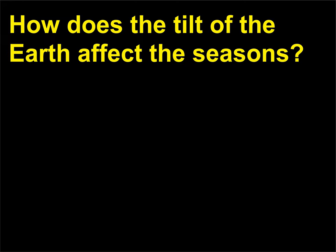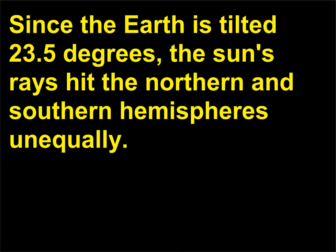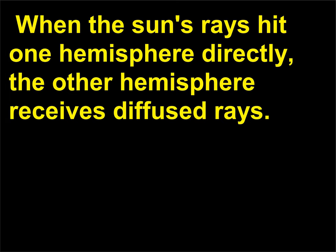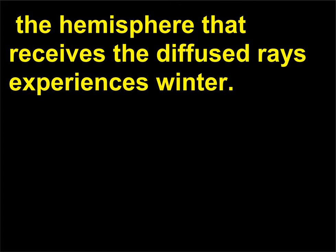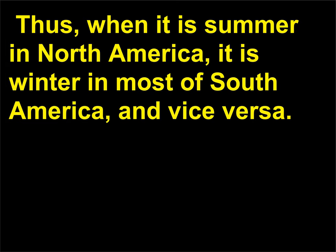How does the tilt of the Earth affect the seasons? Since the Earth is tilted 23.5 degrees, the Sun's rays hit the northern and southern hemispheres unequally. When the Sun's rays hit one hemisphere directly, the other hemisphere receives diffused rays. The hemisphere that receives the direct rays of the Sun experiences summer, while the hemisphere that receives the diffused rays experiences winter. Thus, when it is summer in North America, it is winter in most of South America, and vice versa.